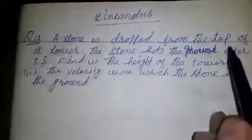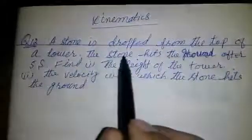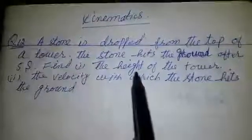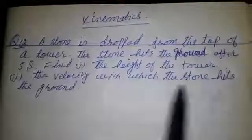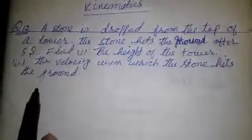A stone is dropped from the top of a tower. The stone hits the ground after 5 seconds. Find the height of the tower and the velocity with which the stone hits the ground. Let's solve it.